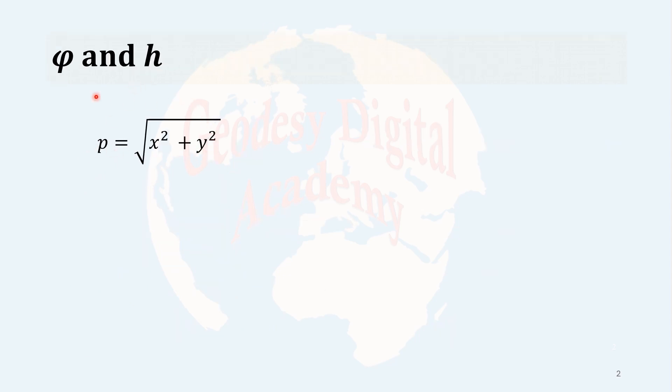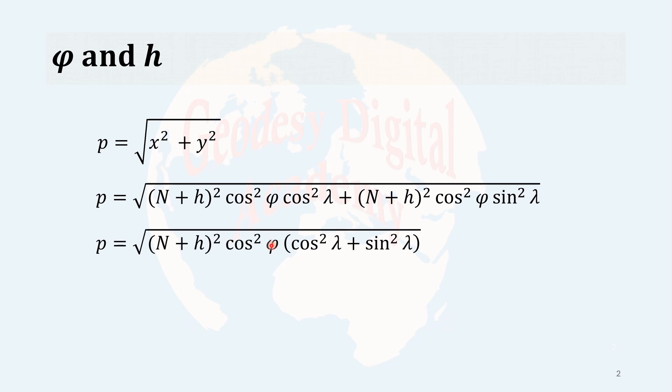Now, let us insert x and y coordinates based on the formula that I gave in the previous slide. And we will get this one. As you see, this part is common in both terms here. If I factorize it, we come to that. And since cosine squared of an angle plus the sine squared of the same angle is equal to 1, then we come to a new formula for p. p, already we have it from Cartesian coordinates. Now we have p in terms of geodetic coordinates.